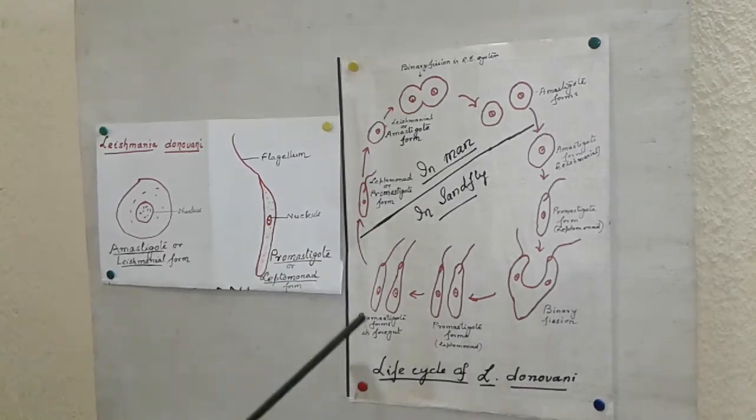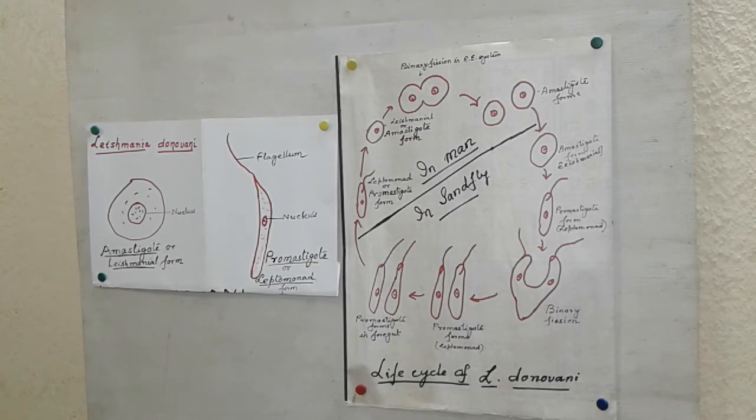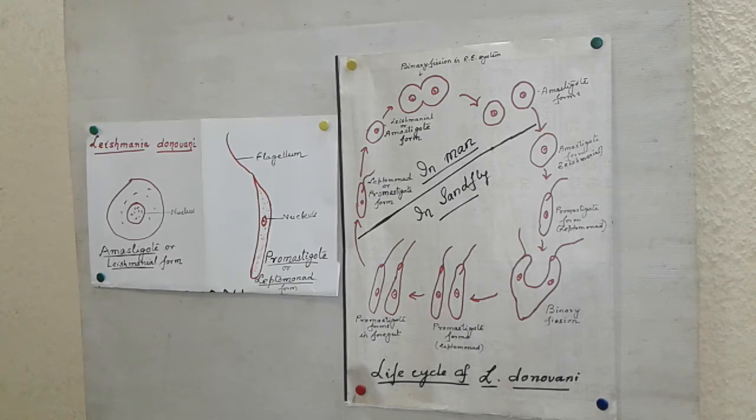Now mode of transmission. When a sand fly containing leptomonad forms in its saliva bites a healthy person, the leptomonad forms reach the human reticuloendothelial system. There they convert into leishmanial form and multiply rapidly by repeated binary fission. As a result, the cells of reticuloendothelial system get overloaded with the parasite and rupture. They again attack fresh cells and the cycle is repeated. Now the symptoms start appearing.